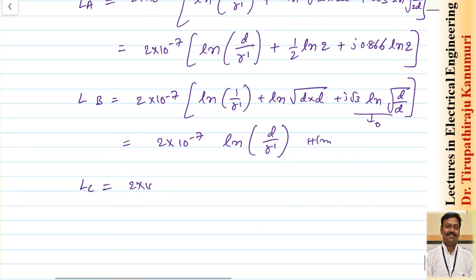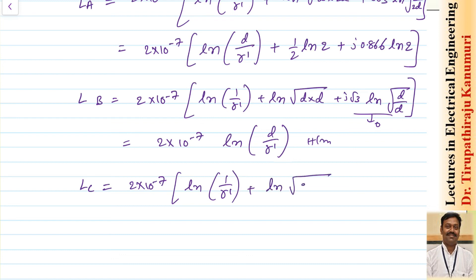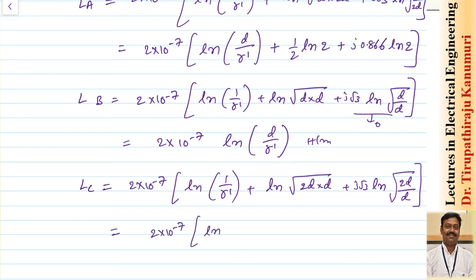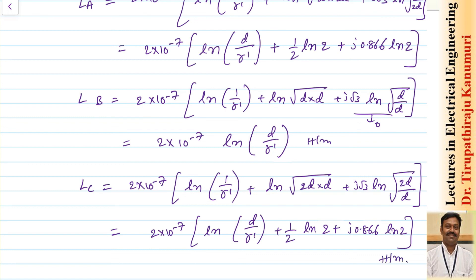For conductor C: distances C to A = 2d and C to B = d. So: Lc = 2×10⁻⁷ [ln(1/r') + ln(√(2d·d)) + j√3·ln(√(2d/d))], which simplifies to Lc = 2×10⁻⁷ [ln(d/r') + (1/2)ln2 + j·0.866·ln2] H/m. This is the inductance of the third conductor in the side-by-side flat configuration.